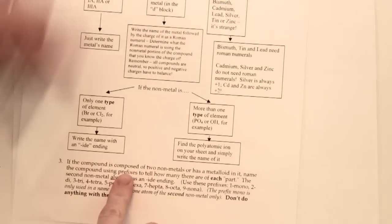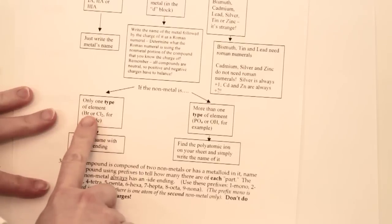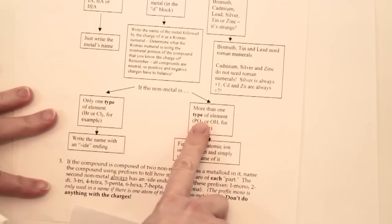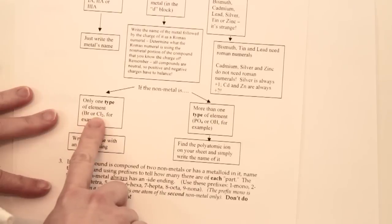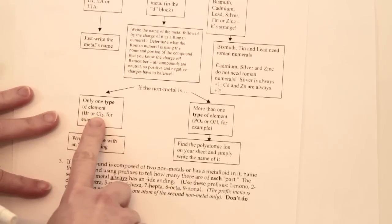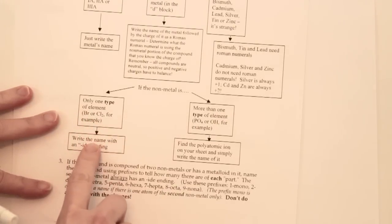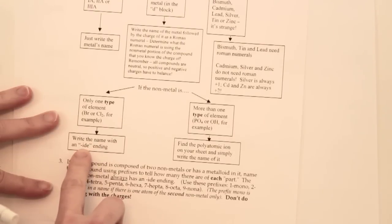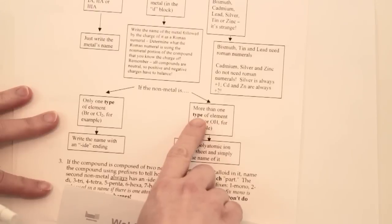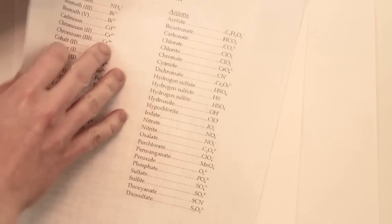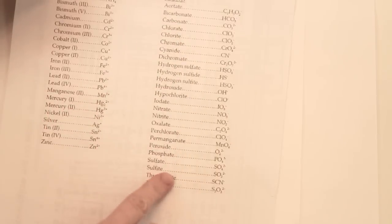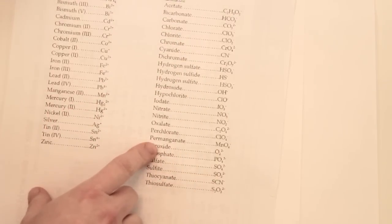For the nonmetal portion, you look and see if it's one type of element or more than one type. If it's just one type of element — like you just see Br or Cl₂, yes there are two atoms of chlorine but they're all chlorine — then you chop off the ending of the element name and put -ide instead. If it's more than one type of element, you look up the name on your charge sheet.